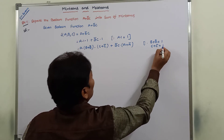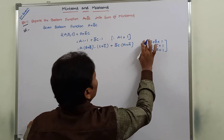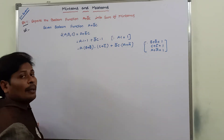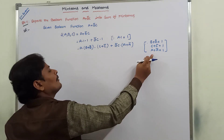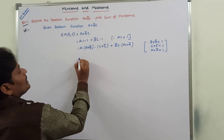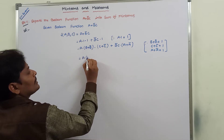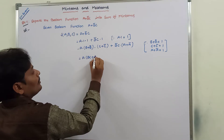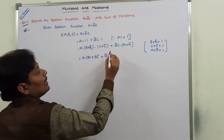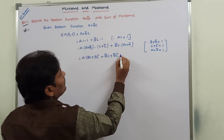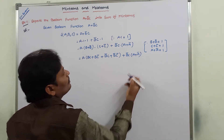We already know that B + B̄ = 1, C + C̄ = 1, and A + Ā = 1. Now we multiply out: A multiplied with (B + B̄)(C + C̄) gives terms BC, BC̄, B̄C, B̄C̄. Then B̄C multiplied with (A + Ā).